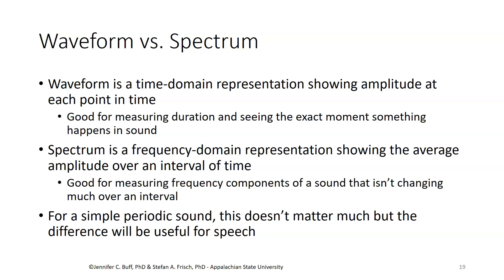The waveform is very useful when looking at a sound over time. It shows us amplitude at each point in time. This is good for measuring things like duration, how long something lasts, or seeing the exact moment that something happens in a sound. The spectrum is a frequency domain representation showing the average amplitude over an interval of time. So this is good for looking at frequency components, but in order to measure a frequency you have to watch a sound for a while. You have to watch its pattern of repetition. So you need that sound to be something that you can watch for a while and have it not change very much, because if it changes then its frequency is going to change. In a simple periodic sound these two things are interchangeable, but when we get to dealing with real sounds in speech, for example, the two different representations will be useful ways to look at different properties of the sounds.